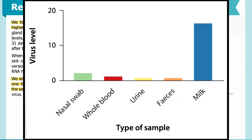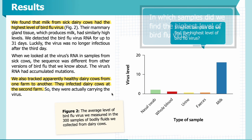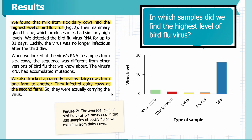In Figure 2, you can see the average level of bird flu virus measured in the 300 samples of bodily fluids collected from dairy cows. On the x-axis of the graph, you can see the type of sample — from left to right: nasal swab in green, whole blood in red, urine in yellow, feces in orange, and milk in blue. On the y-axis, you can see the virus level. Looking at the graph: in which samples did we find the highest level of bird flu virus?